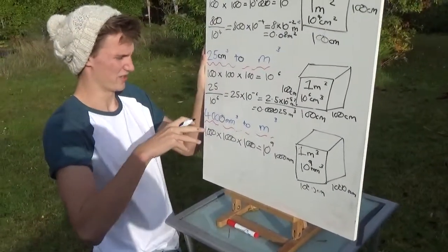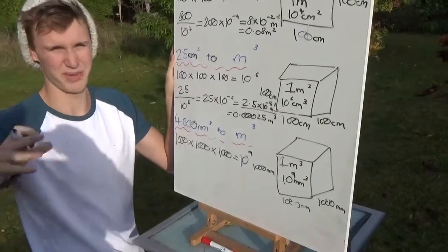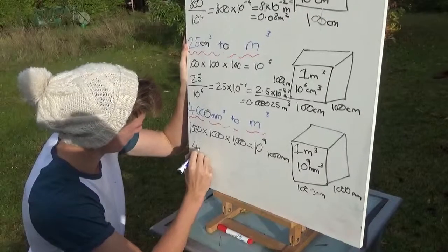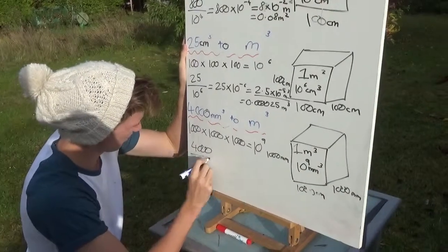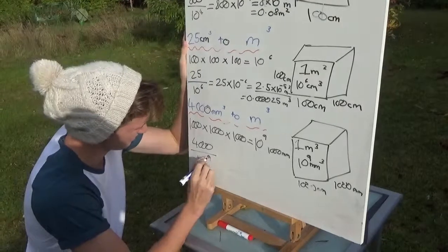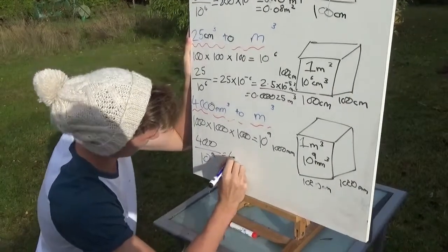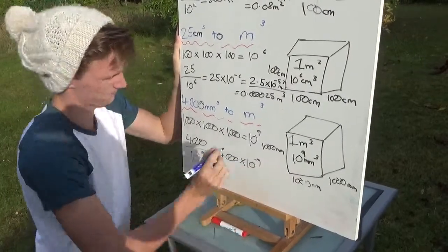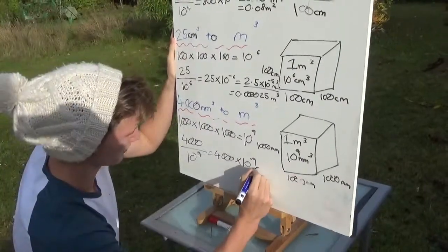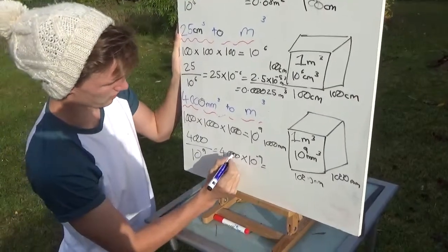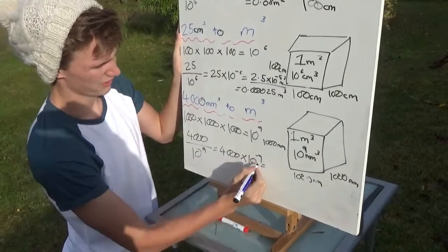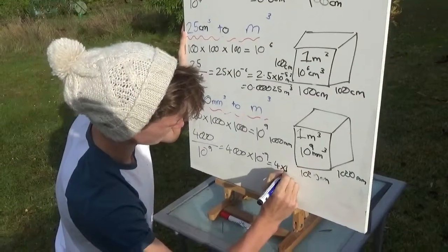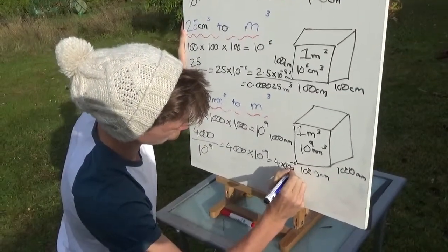Now we know again that it's going to be a smaller number because a meter cubed is bigger than one millimeter cubed. So then we do 4,000 over our conversion factor 10 to the 9, which gives us 4,000 times 10 to the minus 9. If we move the decimal point once, twice, three times, this has to be decreased by three, so we go 4 times 10 to the minus 6 meters cubed.